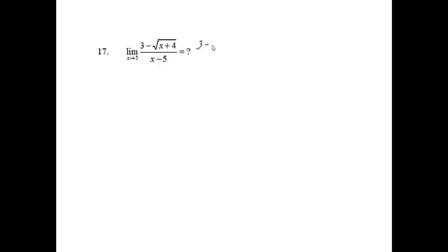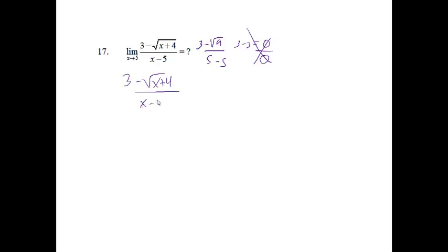Problem 17. Find the limit as x approaches 5. First, plug in 5: I get 3 minus the square root of 9 over 5 minus 5, which gives 0 over 0. That does not mean I can't find the limit. Since this has a square root, we multiply by the conjugate: 3 plus the square root of x plus 4, over 3 plus the square root of x plus 4.